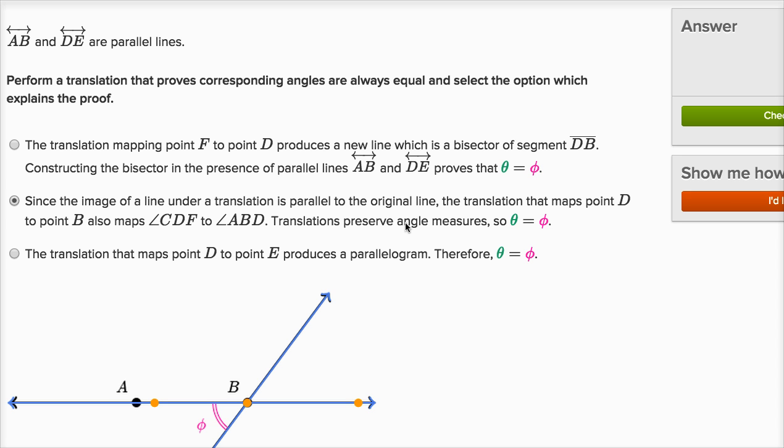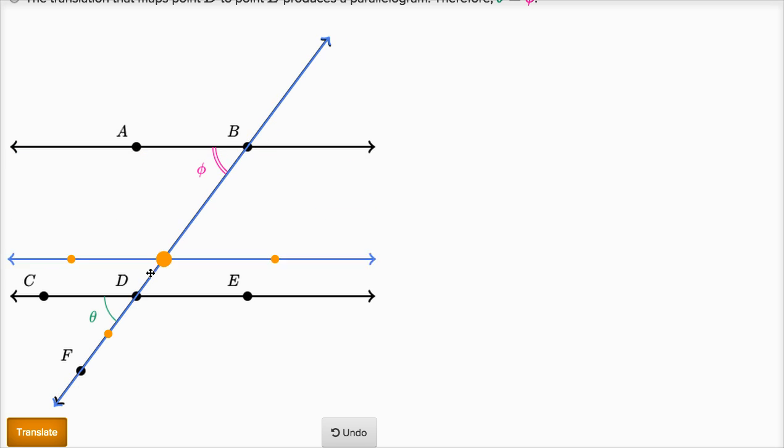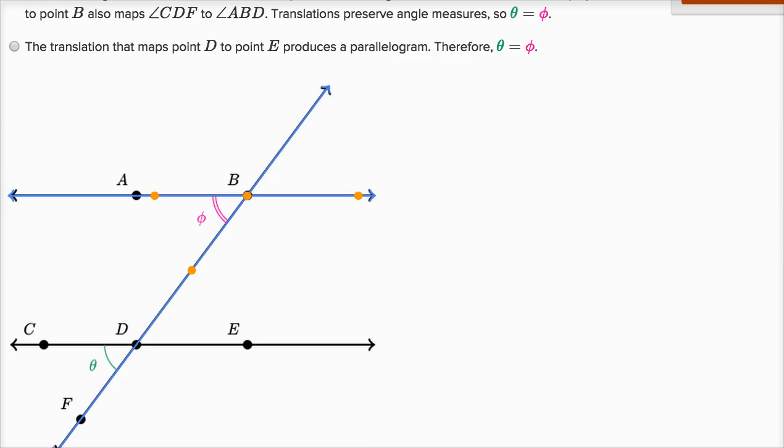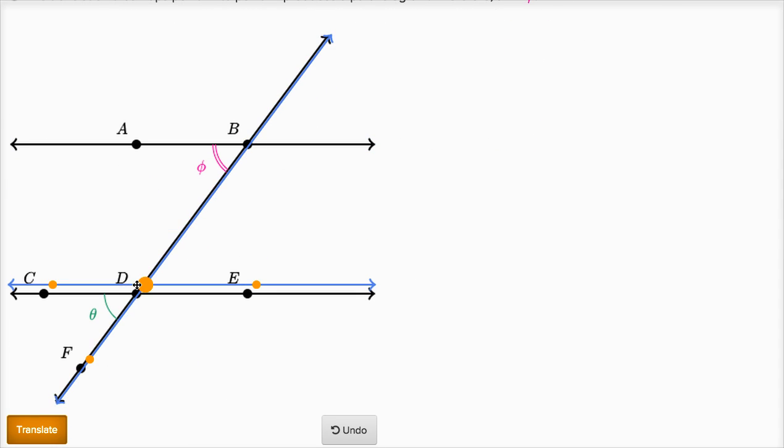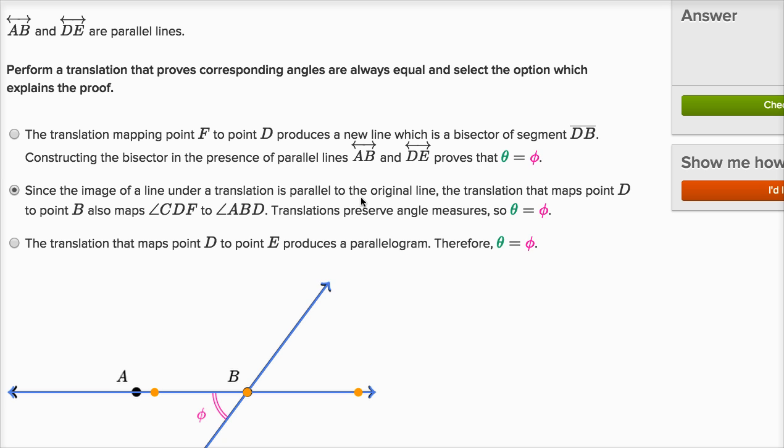The translation that maps point D to E, I didn't do that. Let's just keep reading it just to make sure. Produces a parallelogram, that actually is true. If I translate point D to point E, I have this parallelogram get constructed, but it really doesn't help us establishing that phi is equal to theta, so I don't feel good about that one either. And it's good because we felt good about the middle choice.